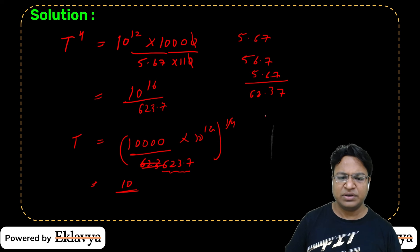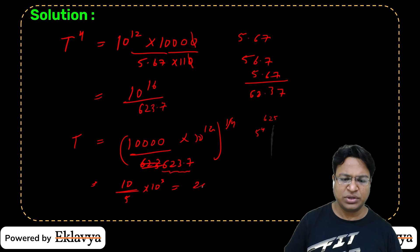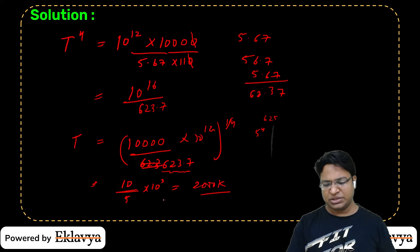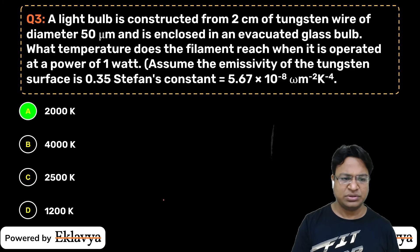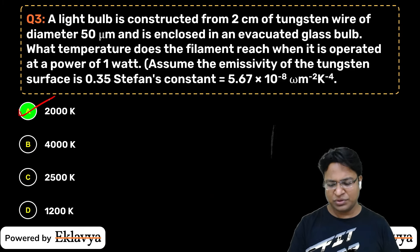The answer is approximately 625 × 10¹² raised to power 1/4, which gives 5 × 10³ = 5000, or in the range of 2000 K. That will be the answer for this numerical-based question.